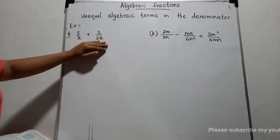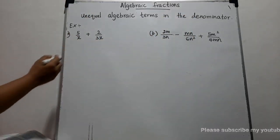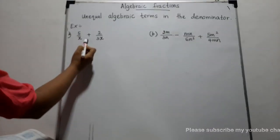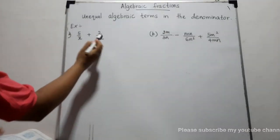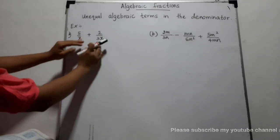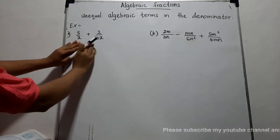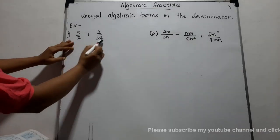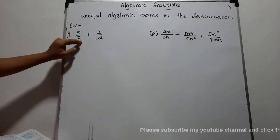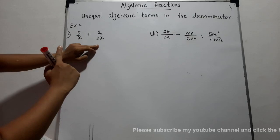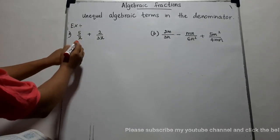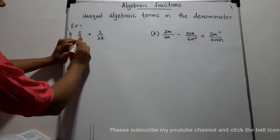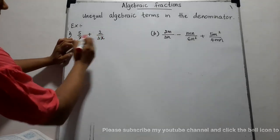Look at this example here. You are given two algebraic fractions to add: 5 over x, added to 2 over 3x. You know if the denominators are unequal, we cannot add them — we have to obtain a common denominator. How do we obtain the common denominator? Can you remember, in the previous lesson we learned LCM? We have to obtain the LCM of these unequal denominators.